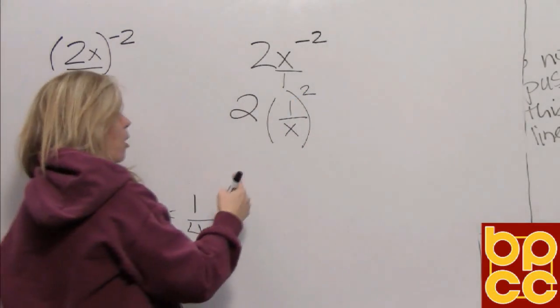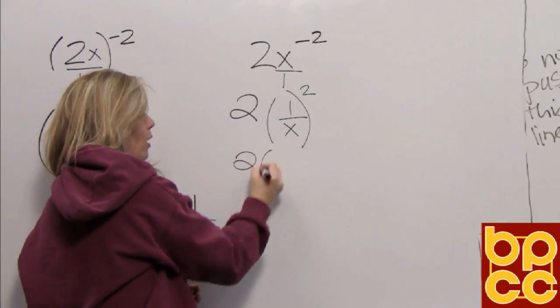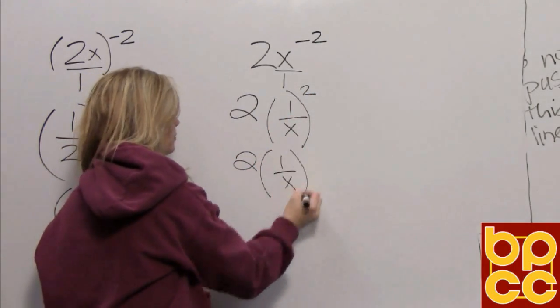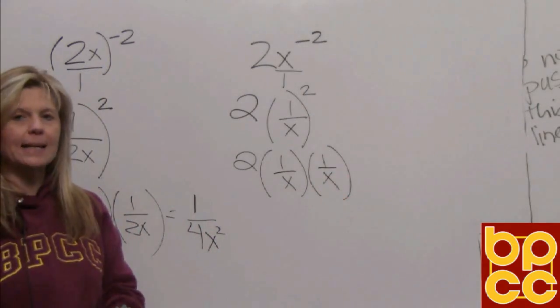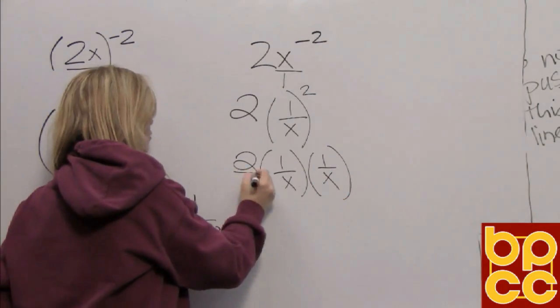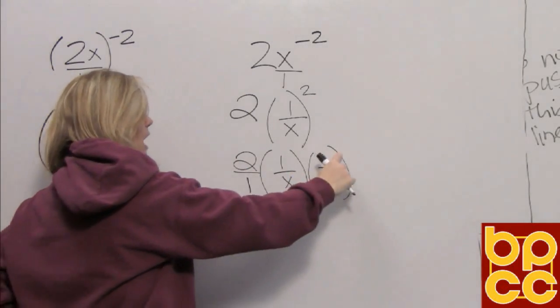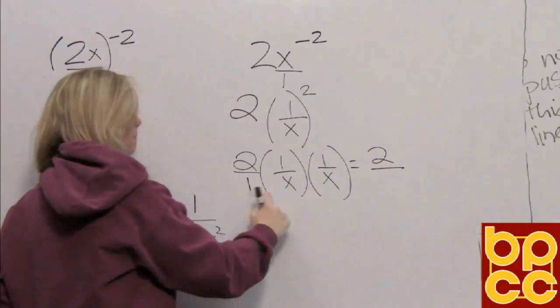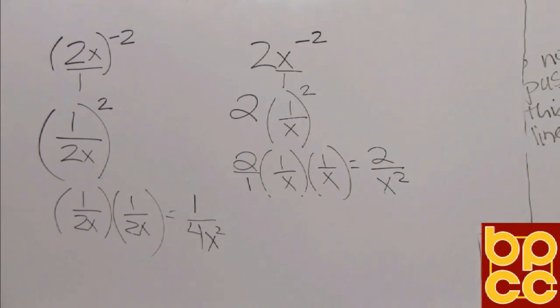Again we know our order of operations. We cannot multiply first till we square. Squaring means to write it twice. Once we write it twice it's connected by multiplication. We can make the whole number to a fraction. And now we're multiplying fractions. Top times top, bottom times bottom. So if you look by having the parentheses makes a difference in the value of the expression.